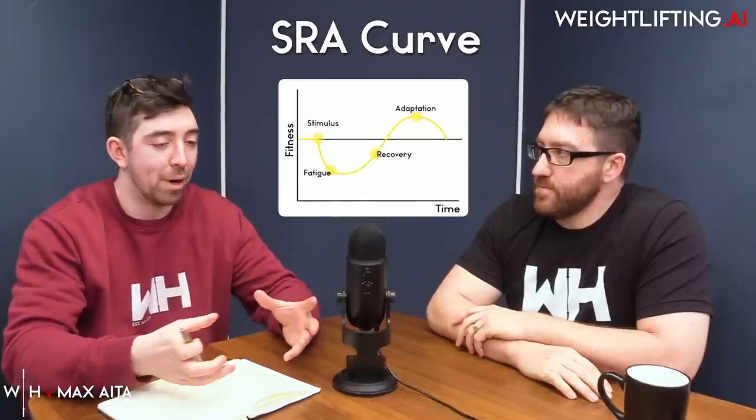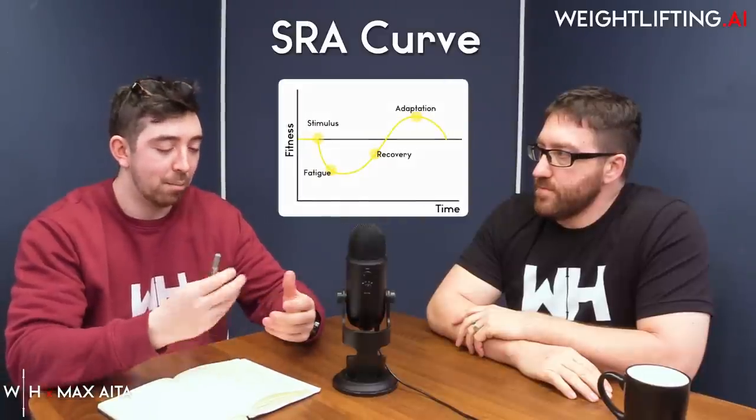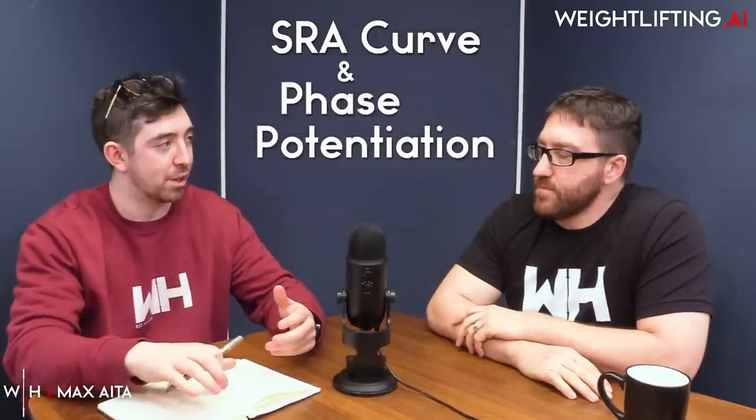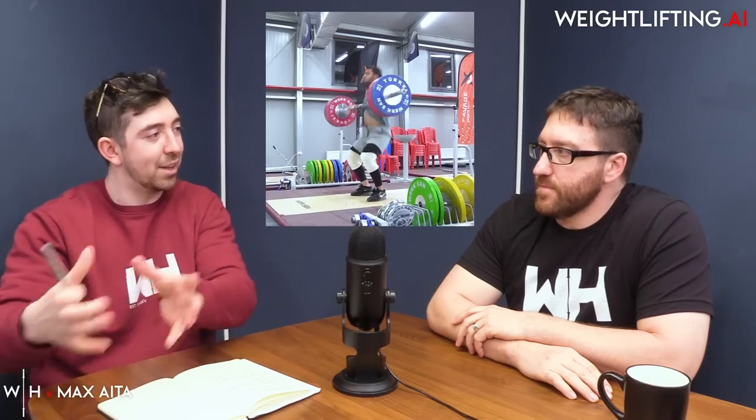The final two principles we want to go through, which we're taking account for in the weightlifting AI app, are the SRA curve — which we'll explain more about later in this video — and phase potentiation: how one phase leads into the next, builds qualities relevant for the next, and almost optimizes the next phase of a program.